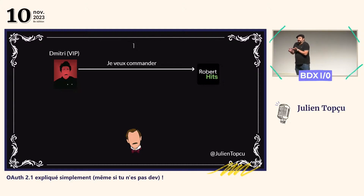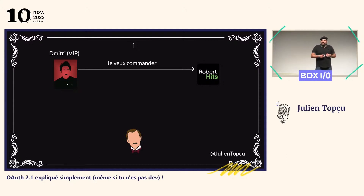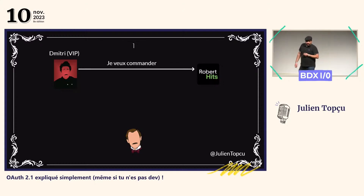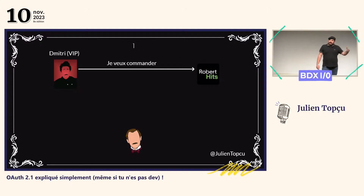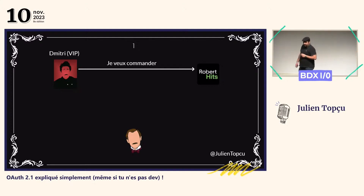Mais là, ils vont être face à un problème : ils ne connaissent pas Dimitri, ils ne savent pas si c'est réellement un VIP de l'hôtel. Donc le seul moyen qu'ils ont pour vérifier ça, alors qu'ils ne peuvent plus accéder directement à son compte, c'est de faire appel à Gustave. Gustave, the manager, is someone who they know, who they trust, because it's with him that they have a contract. It's Gustave who made the contract with Robert Ritz.